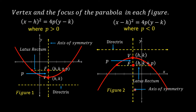In Figure 2, the vertex is at point (h, k). The focus of the parabola is below the vertex. The first coordinate of the focus is h and the second coordinate is k plus p. If the focus is below the vertex, the parabola opens downward and its equation is in the form: (x minus h) squared equals 4p times (y minus k), where p is less than zero.